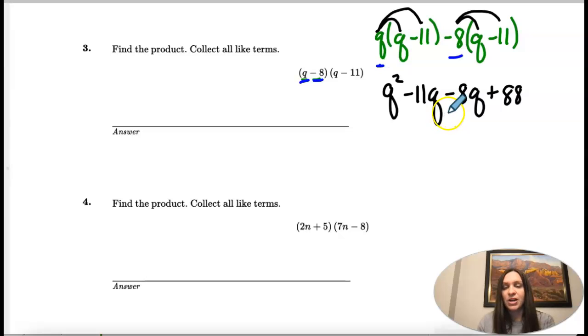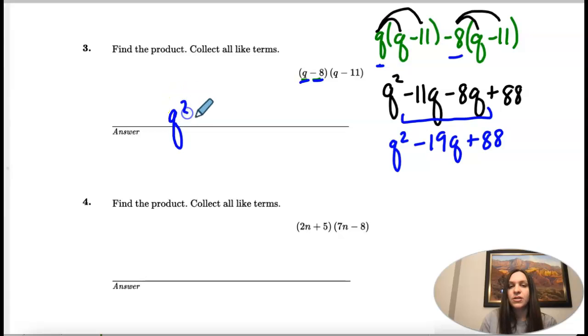Like terms are same variable, same exponent. The Q squared doesn't have any other Q squareds, so that doesn't have a like term. But both of these have a Q, so we're going to combine those. Now we're using our subtraction rules. Negative 11 minus 8 is negative 19, and then we stay with one Q. Then plus 88. That would be our answer because there's no more like terms to combine.